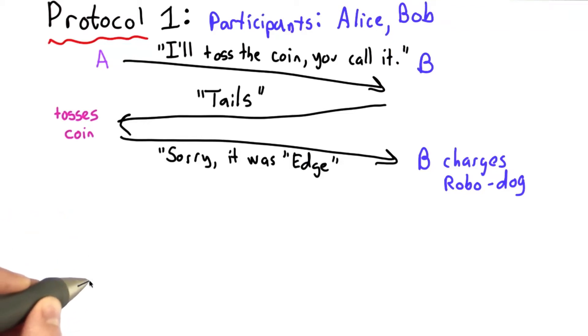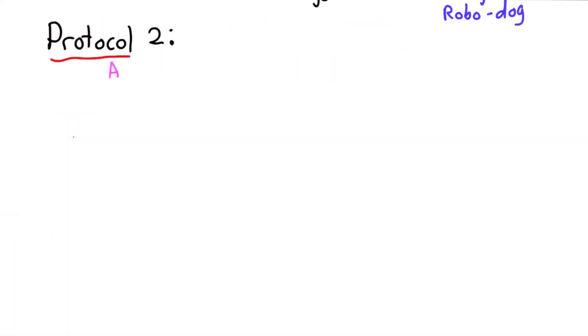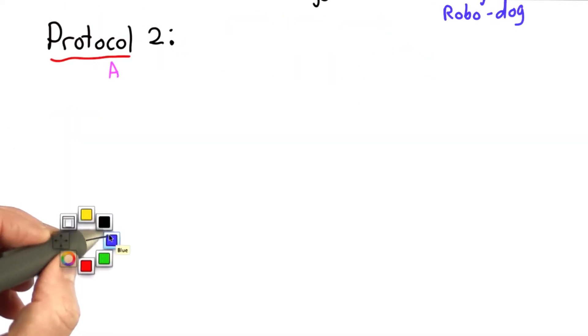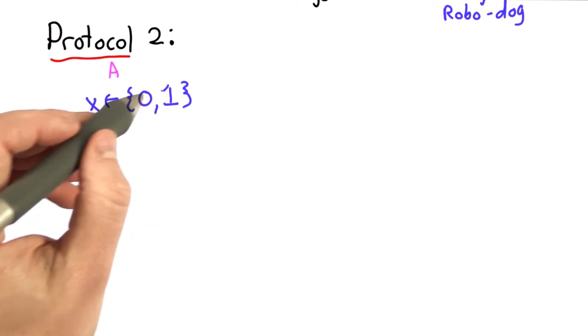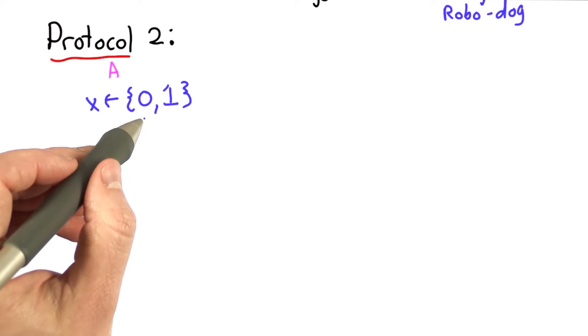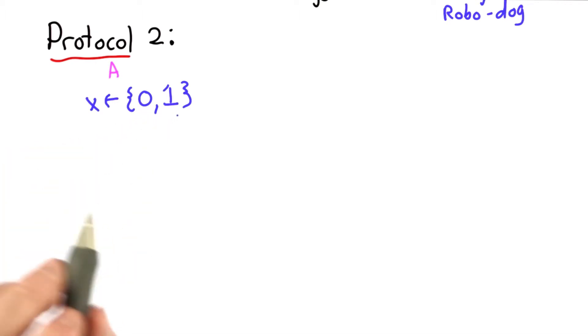We need something better than this if we want to deal with mutually distrusting parties. We'll call this Protocol 2. In this protocol, Alice will start by doing three things. She'll pick a value for x. There are two possible values, 0 and 1. We can think of 0 as representing heads and 1 representing tails.